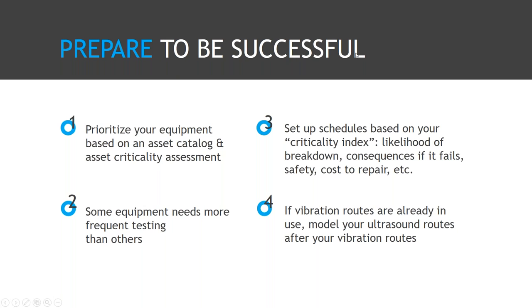Prepare to be successful: prioritize equipment based on an asset catalog and criticality assessment. Some equipment needs more frequent testing — some you can put on a monthly route, some quarterly, and some of your more critical assets are appropriate for continuous 24/7 monitoring. Set up schedules based on this criticality index, considering likelihood of breakdown, safety issues, and cost of repair. If you've already got vibration routes in place, you can model ultrasound routes right after those — you don't have to reinvent the wheel.